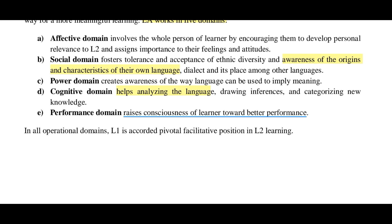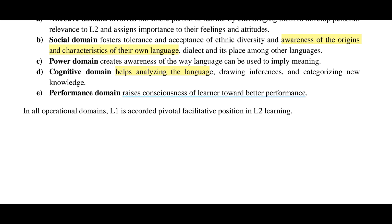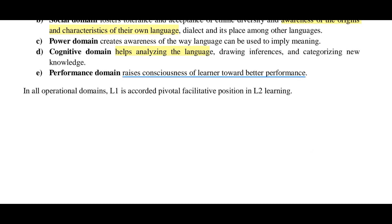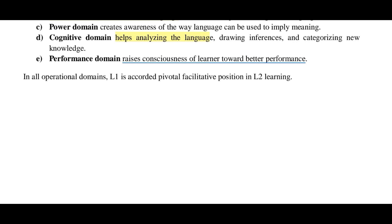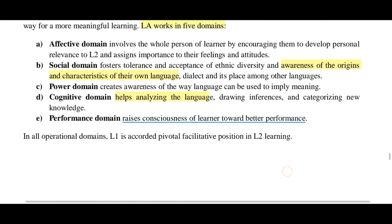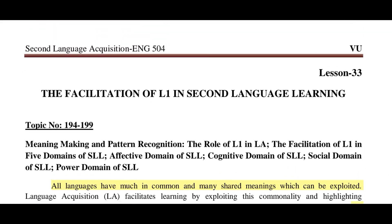Social domain covers awareness of learners' own languages and dialects. Power domain creates awareness of the way language can be used to imply meaning — even words not explicitly spoken can carry implied meaning. Cognitive domain links to mental processes: comprehending and analyzing language and how new knowledge is processed. Performance domain focuses on using language and emphasizes improvement, raising learners' consciousness toward better performance. That concludes this lesson — if you found the lecture helpful, please like, subscribe, and enable notifications for upcoming videos.